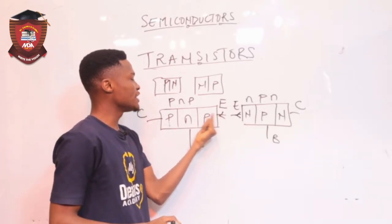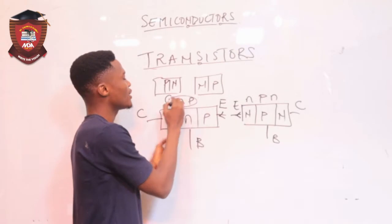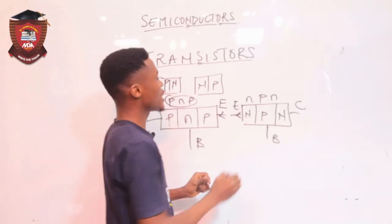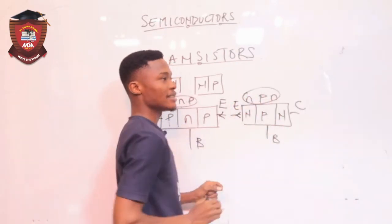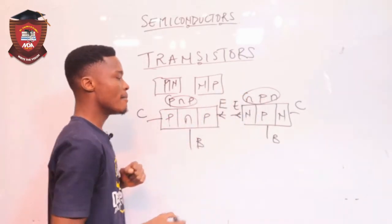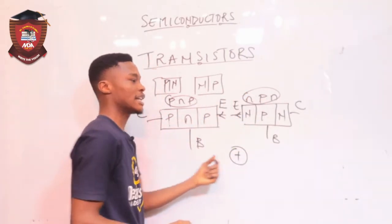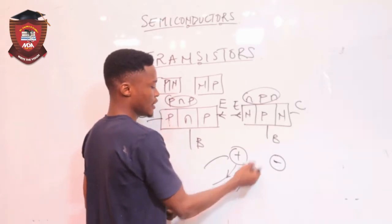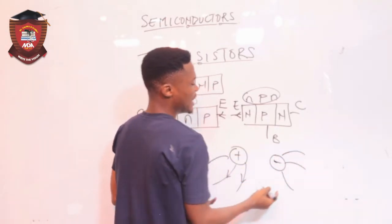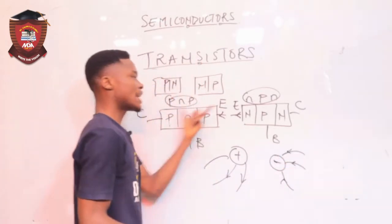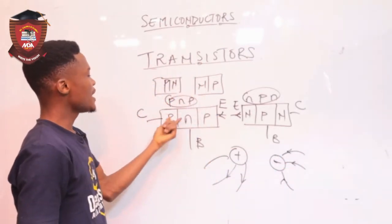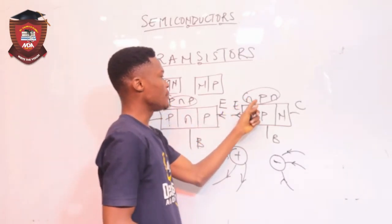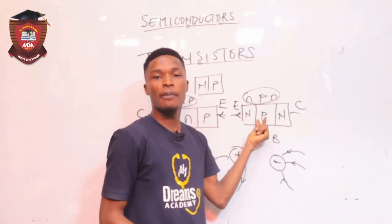If the arrow is pointing inwards, it means the transistor is a PNP transistor. If the arrow is pointing outwards, it is an NPN transistor. To remember this: lines of force around an isolated positive charge point outwards, while lines of force for a negative charge point inwards. In a PNP, the base is negative, so the arrow points in. In an NPN, the base is positive, so the arrow points outwards.